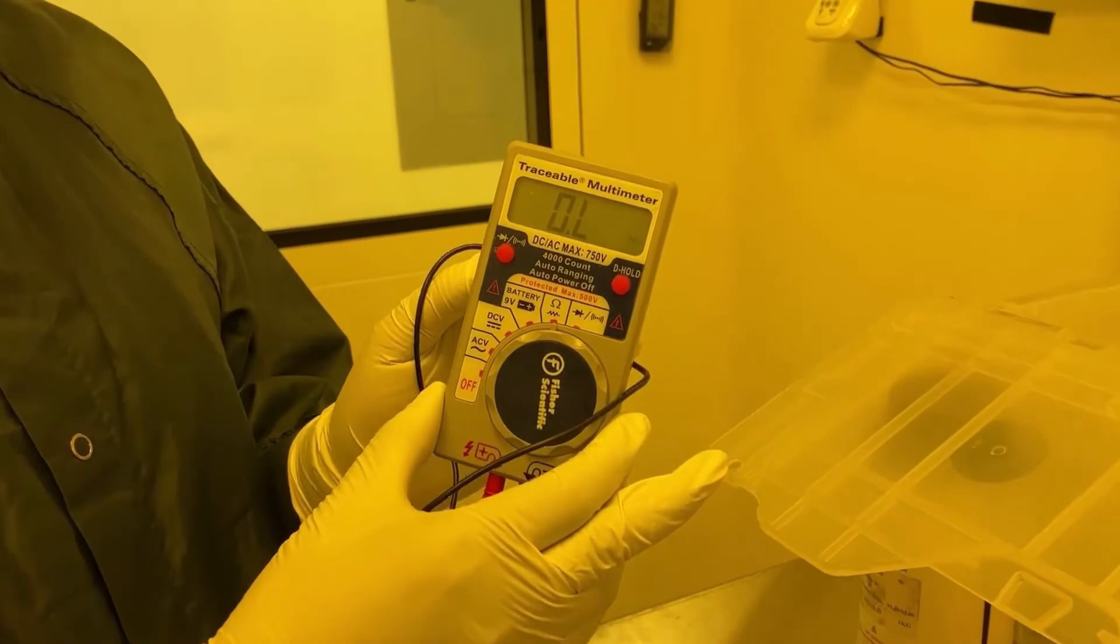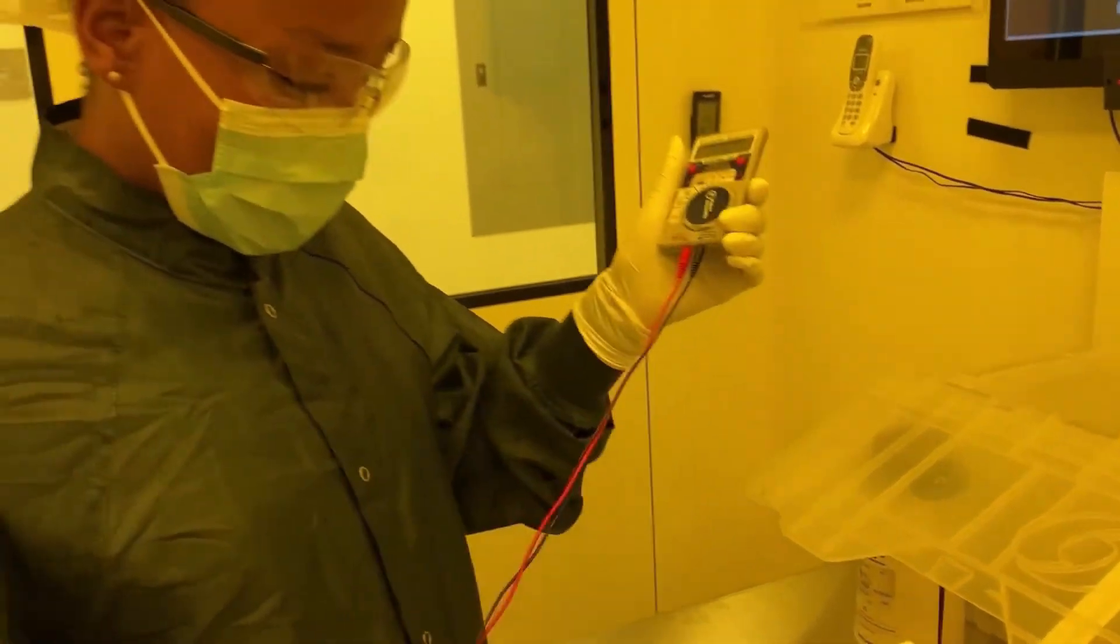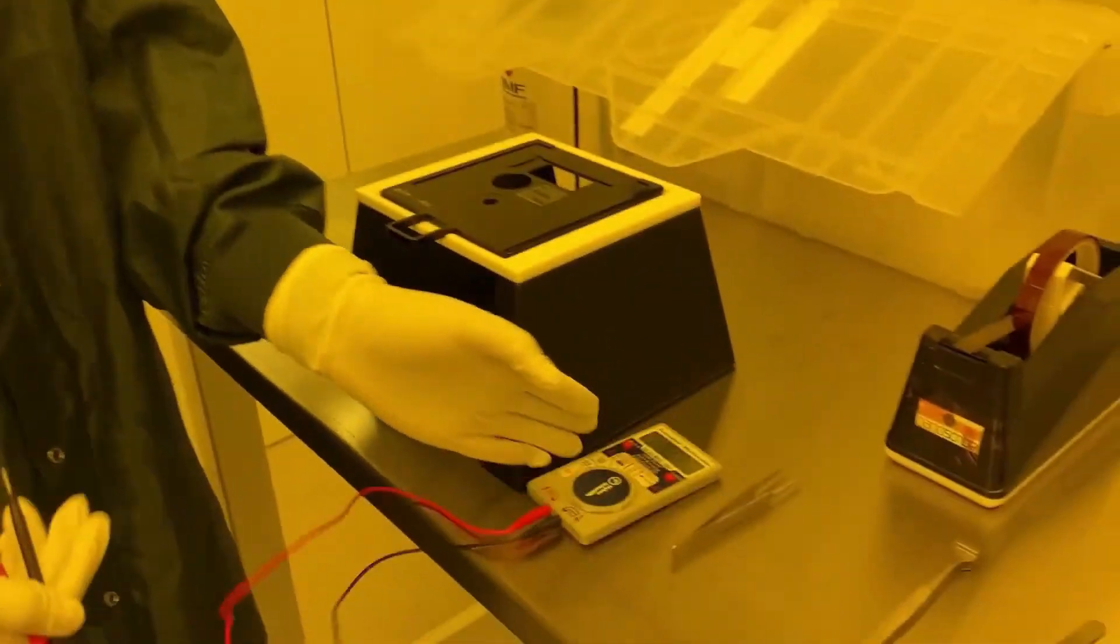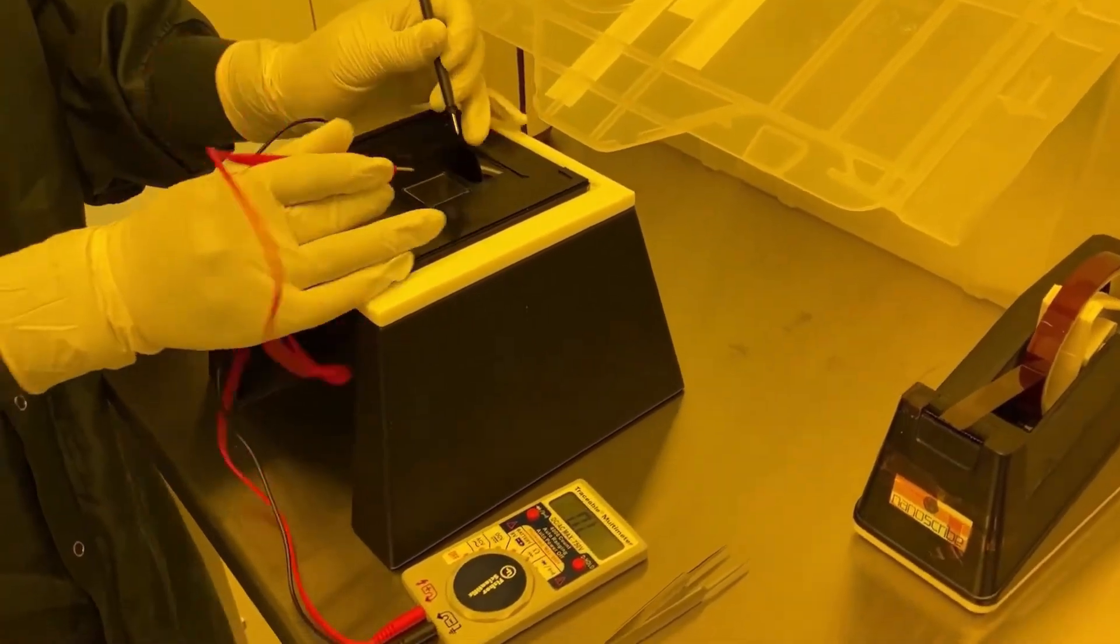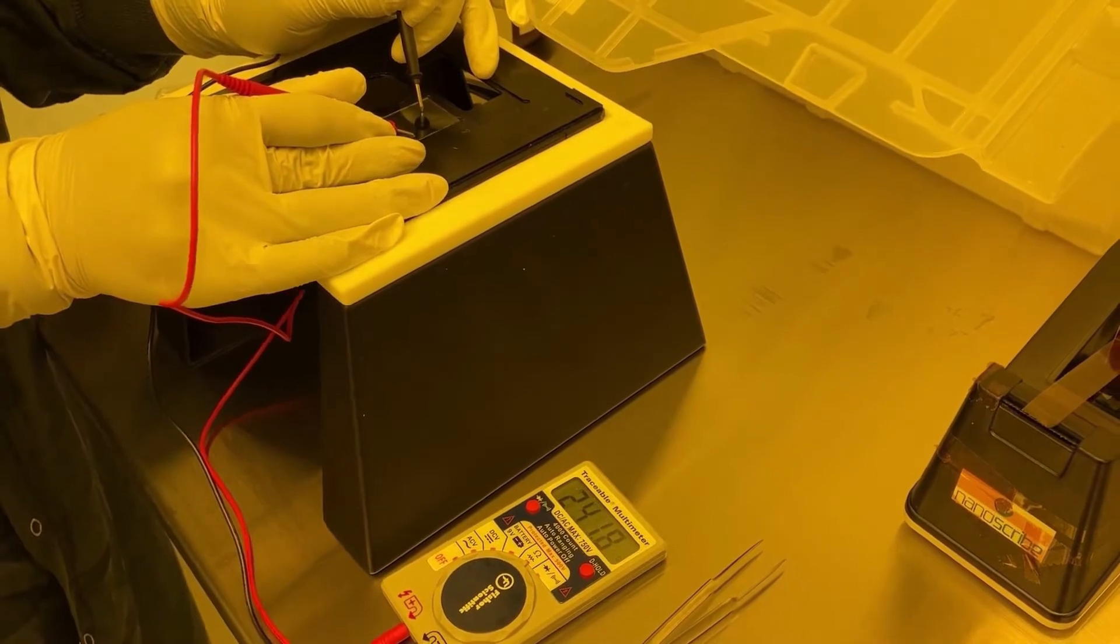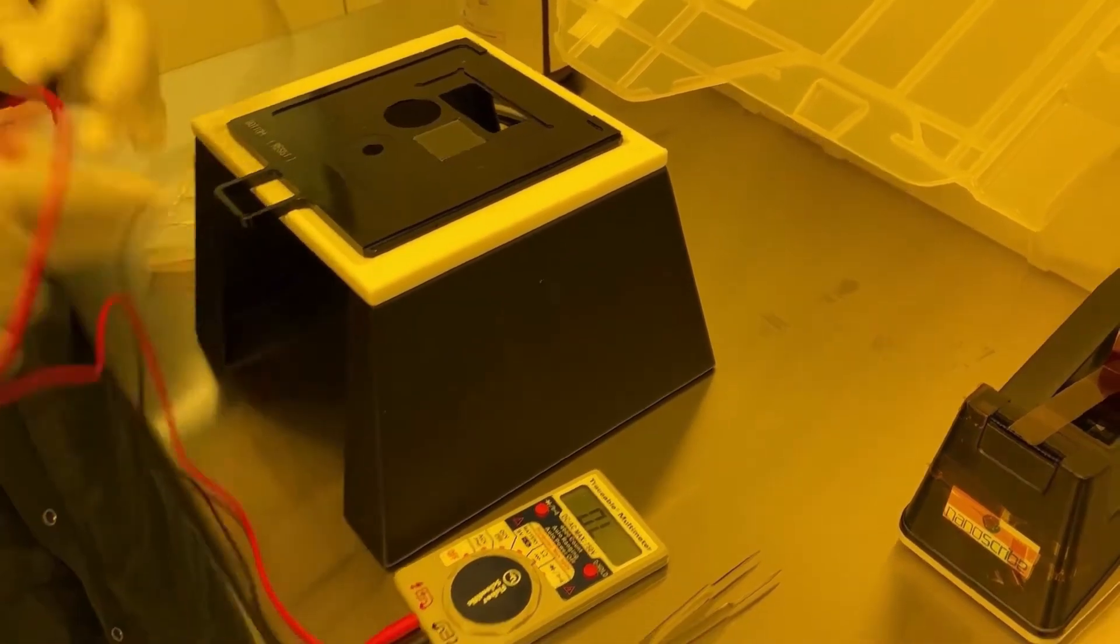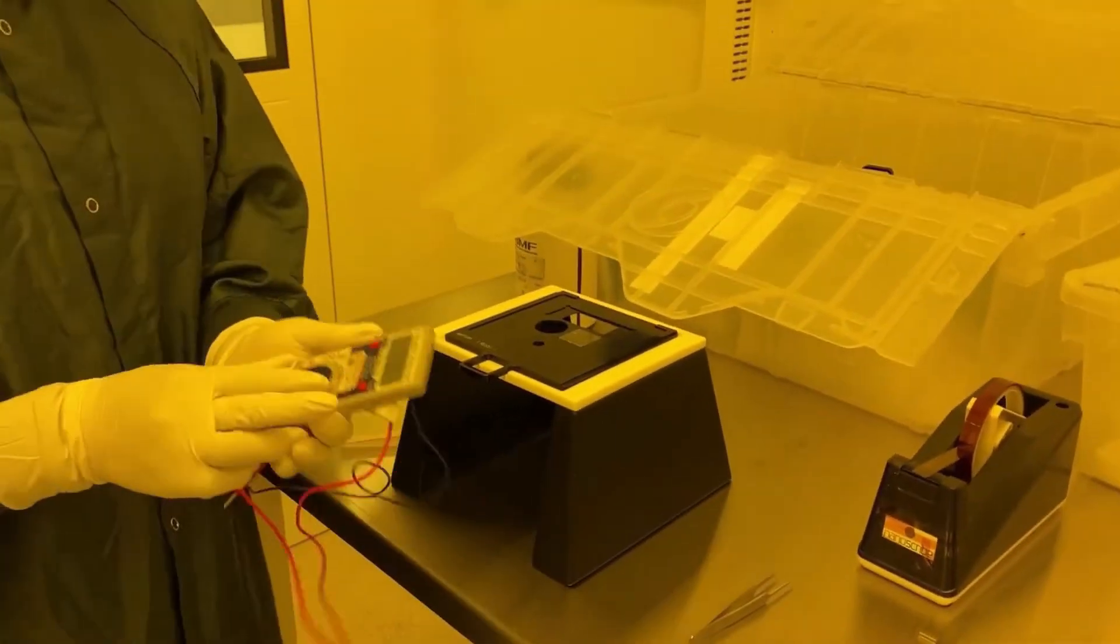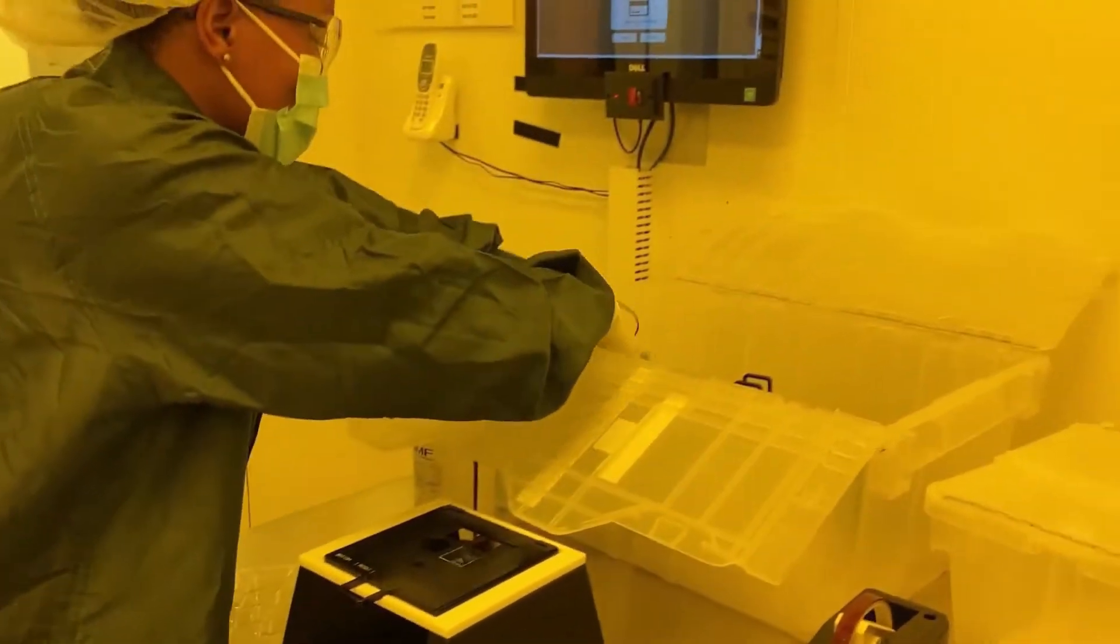Rest the wire leads on the substrate. If the multimeter reads back numbers, you know you are on the correct side because it shows that that side has conductivity and you can continue the process. If there is no reading and the multimeter reads zero, then turn the substrate over to the other side and test again.